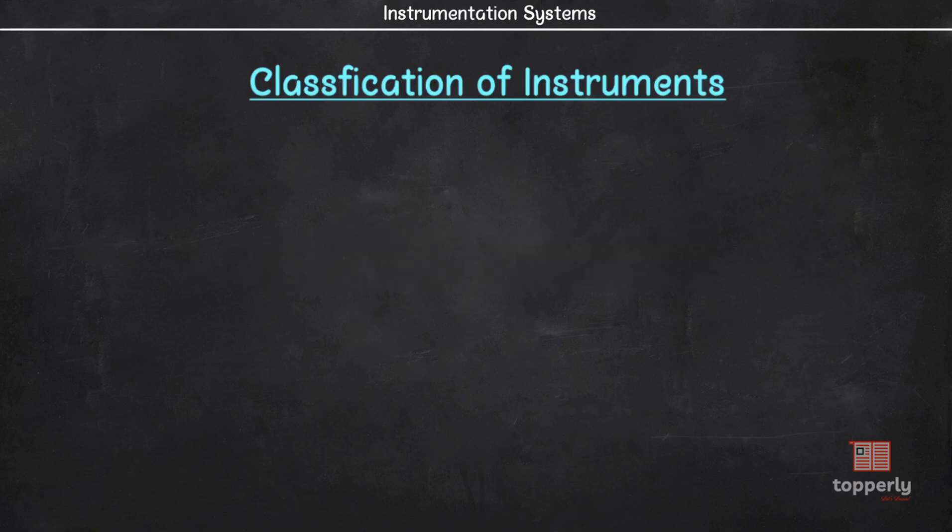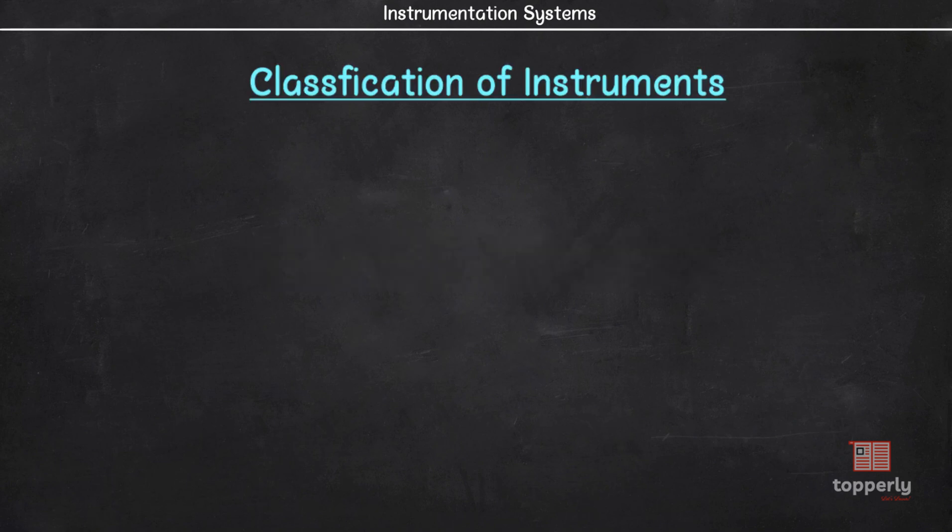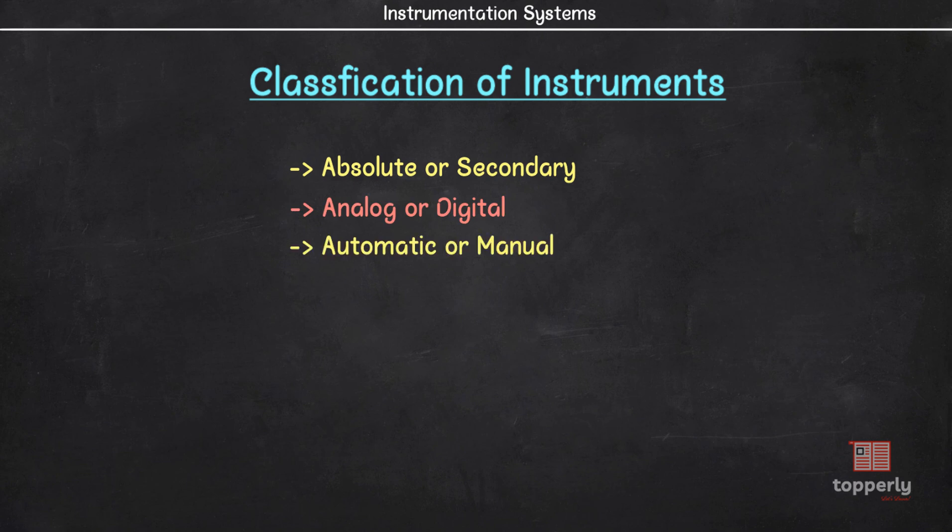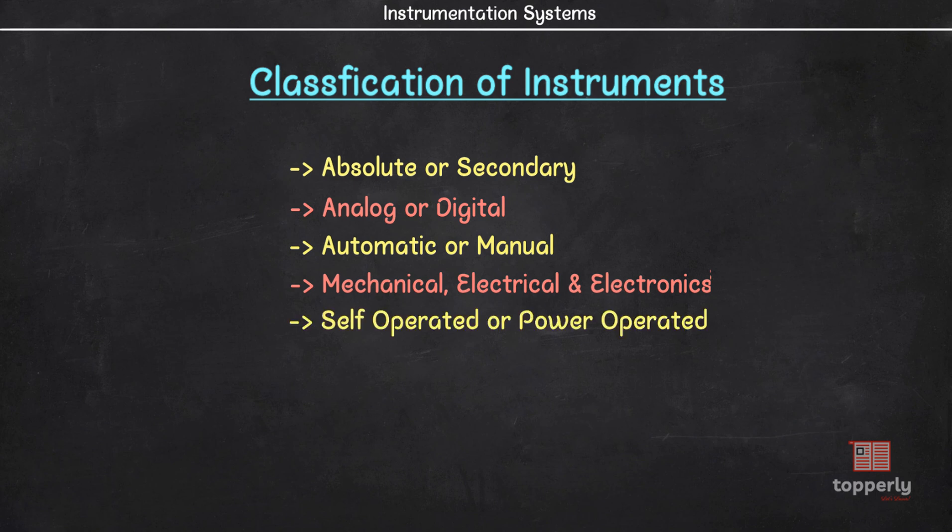In this lecture, we are going to classify the instruments on whether they are absolute or secondary, analog or digital, automatic or manual, mechanical, electrical or electronic, self-operated or power-operated and finally on the method of measurement which we covered in the last video. So let's start our lecture.